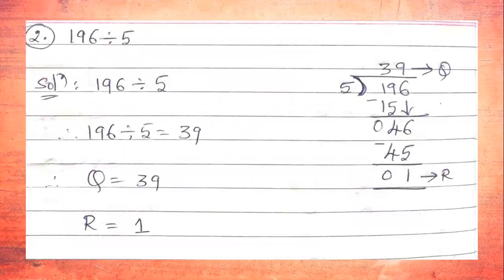The second problem: the given number is 196 divided by 5. We write the solution: 196 ÷ 5. The division is shown in the rough column to the right side. Here 196 is the dividend and 5 is the divisor. We should find the quotient and remainder. We first take the number 19 and check against divisor 5, reading the 5-times table for a number less than or equal to 19.